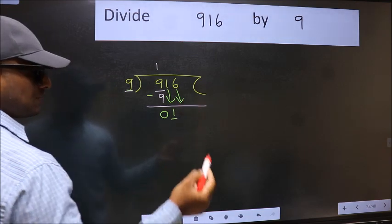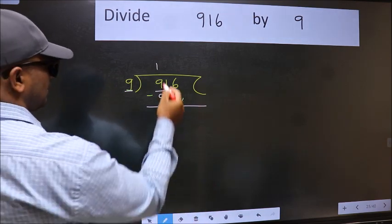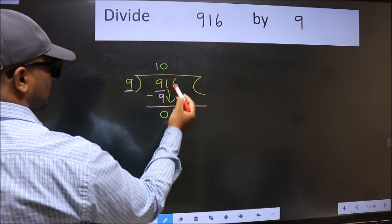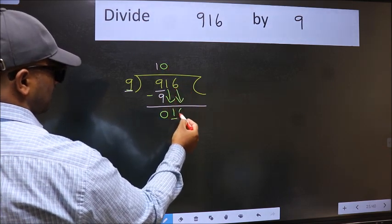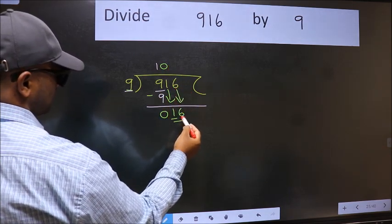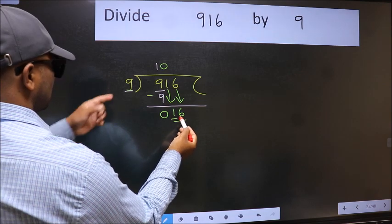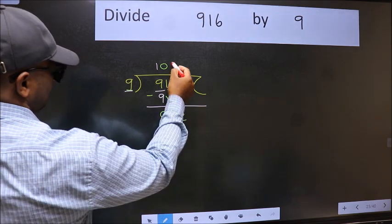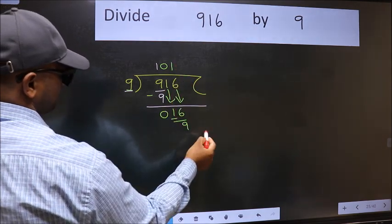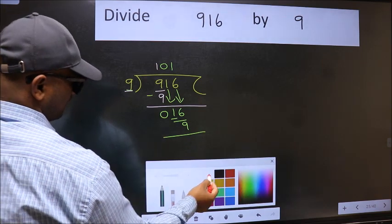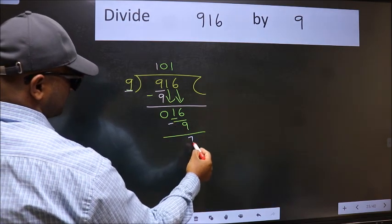The rule to bring down the second number is we should put 0 here; then only we can bring this number down. Now we have 16. A number close to 16 in the 9 table is 9 ones are 9. Now we should subtract. We get 7.